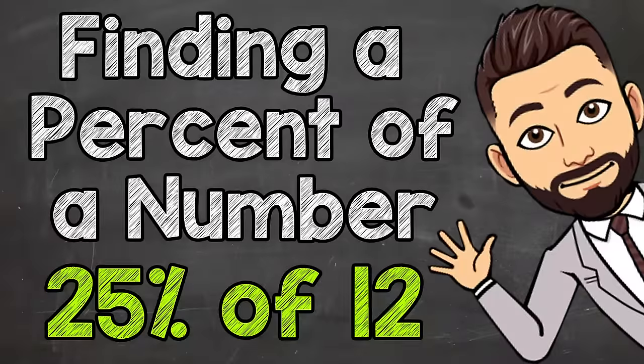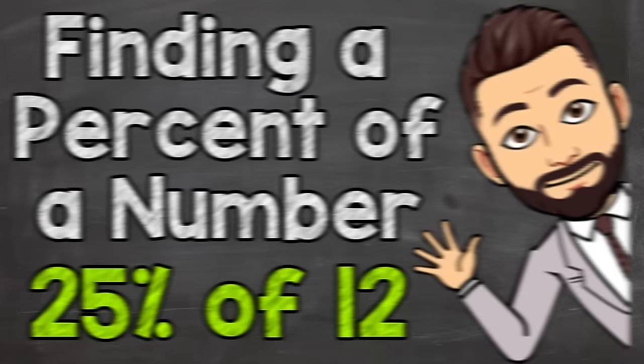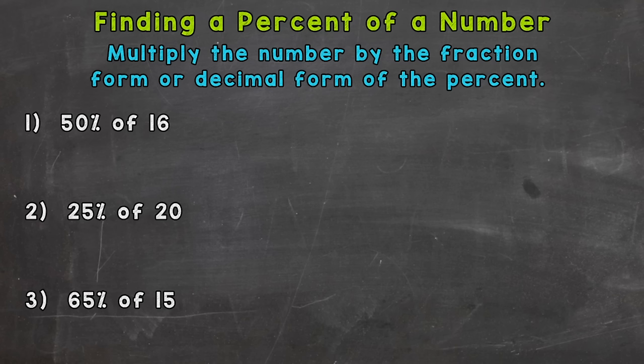Welcome to Math with Mr. J. In this video I'm going to cover finding a percent of a number, and we are going to do that by multiplying the number by the fraction form or decimal form of the percent. As you can see, there are three examples that we're going to go through together in order to get this down.